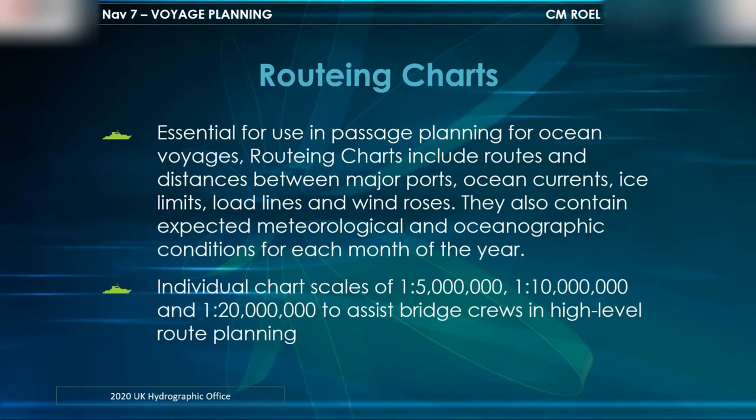Routing Charts are essential for use in passage planning for ocean voyages. Routing Charts include routes and distances between major ports, ocean currents, ice limits, load lines, and wind roses. They also contain expected meteorological and oceanographic conditions for each month of the year.